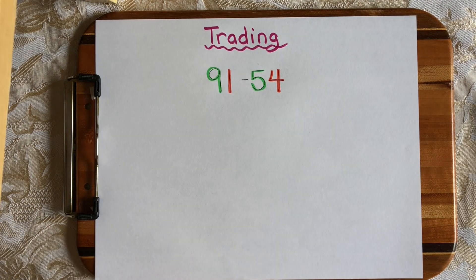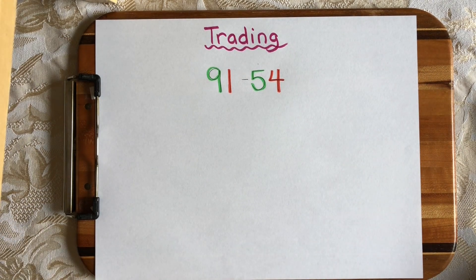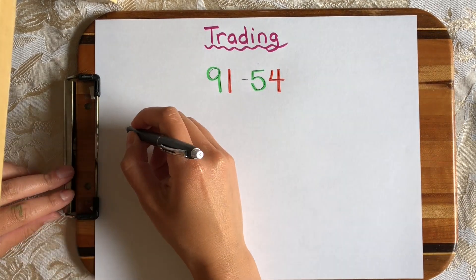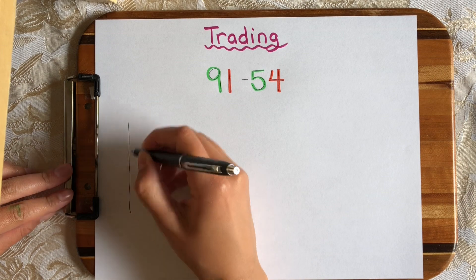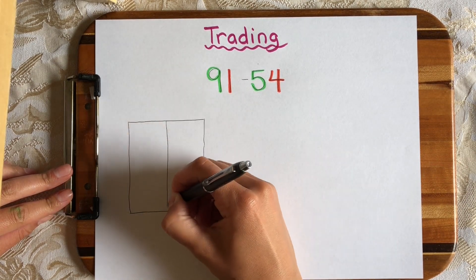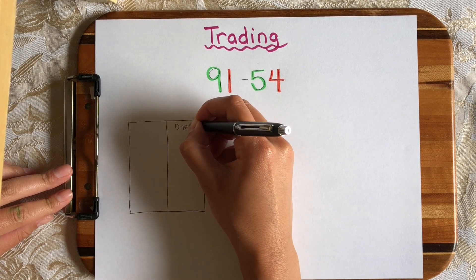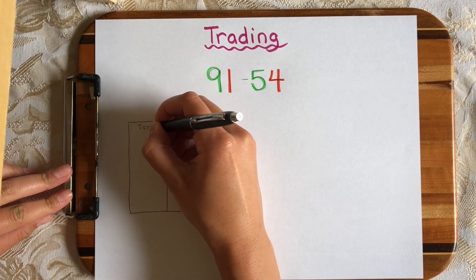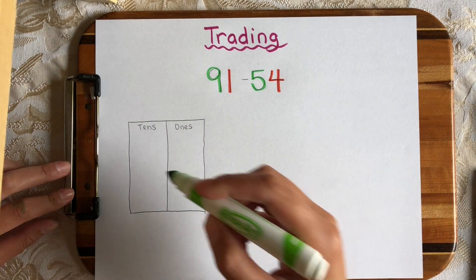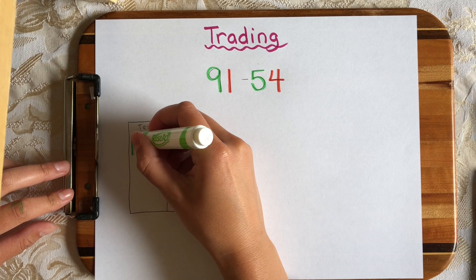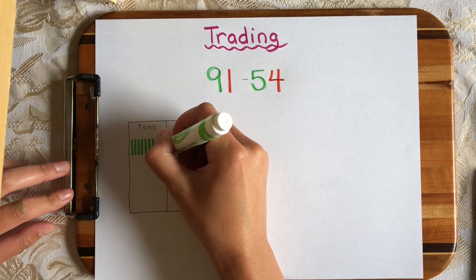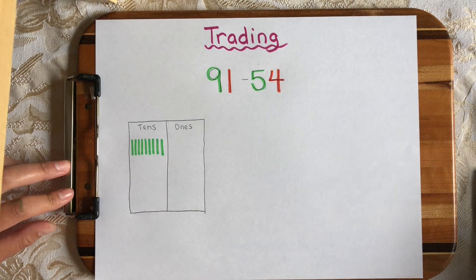I'm going to start off by showing you the trading strategy using lines and dots first, and then we will try it with numbers after. So let me get my 10s and 1s house ready. This side will be 1s, this side will be 10s, and I'm going to start off by drawing 91 with lines and dots. So 91 has 9 tens, 1, 2, 3, 4, 5, 6, 7, 8, 9, and 1 one.